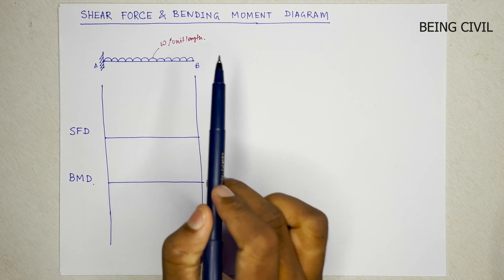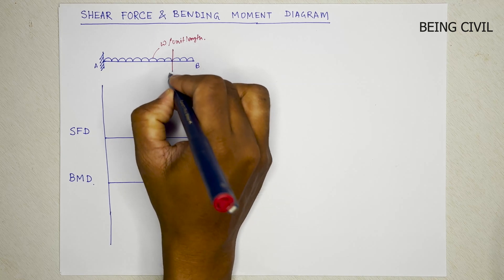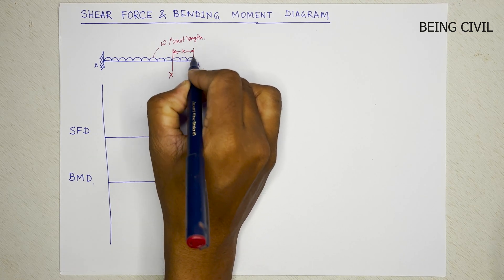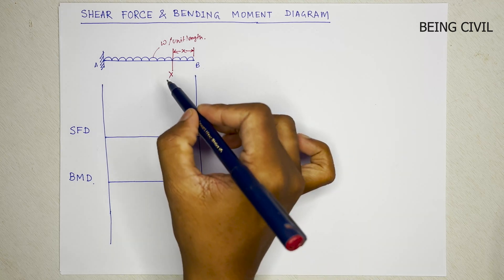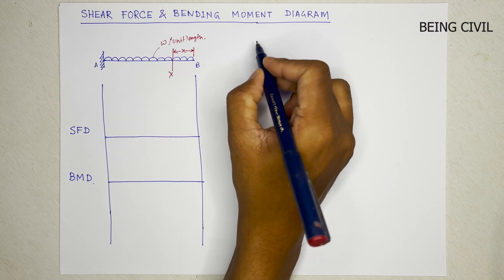To draw shear force and bending moment, we will take a section X at a distance of small x from this free end and we will calculate the shear force and bending moment at this section.